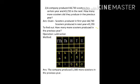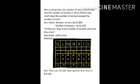Now what are the keywords in this question? 'How many more scooters' — you have to underline these because they are the keywords in this problem. Now write down the third question. In a certain city the number of men is 16,37,856 and the number of women is 16,52,978. By how many does the number of women exceed the number of men?